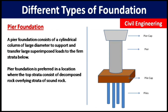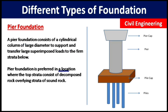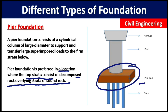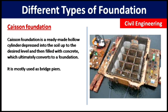The next type is pier foundation. It is similar to pile foundation but the difference is that it consists of cylindrical columns of large diameter to support and transfer large loads. Pier foundation is prepared in locations where the top strata consists of decomposed rock overlying strata of sound rock — that is, where the lower layer of soil is hard rock.